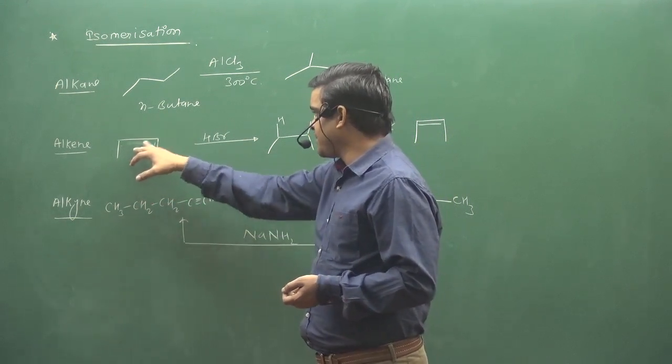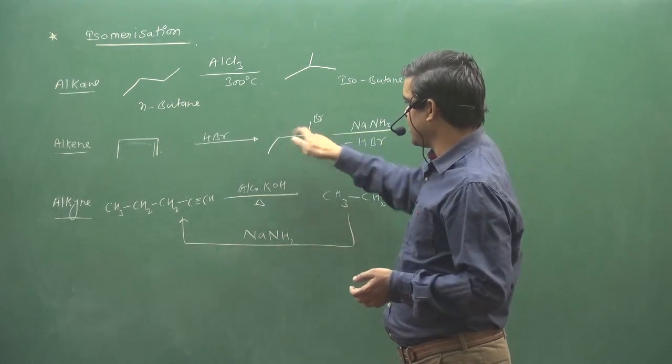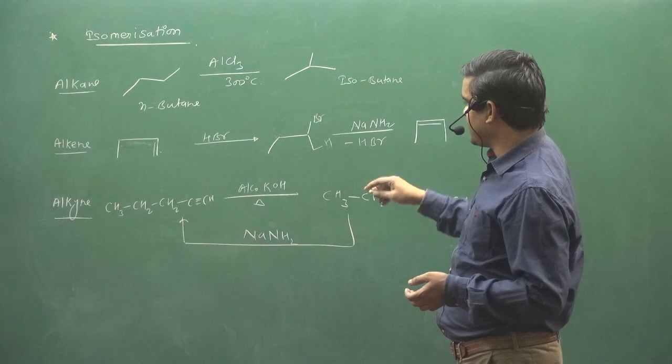For alkanes, how will HBr addition happen? Alkane is here, HBr is added, then NaNH2 causes elimination.